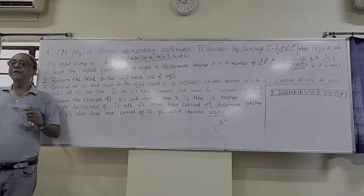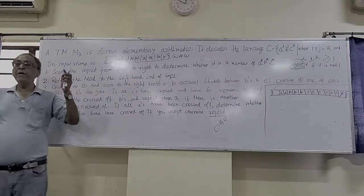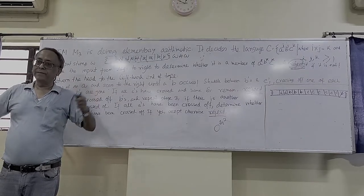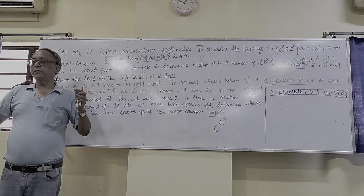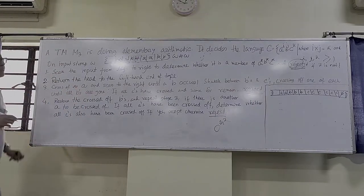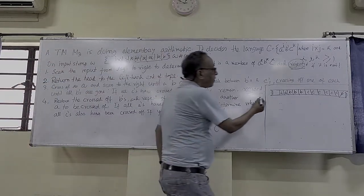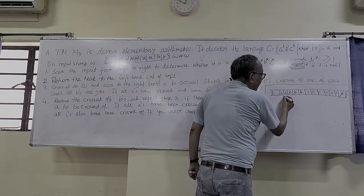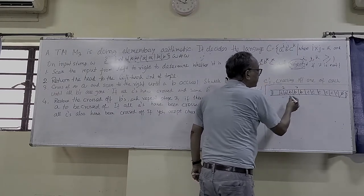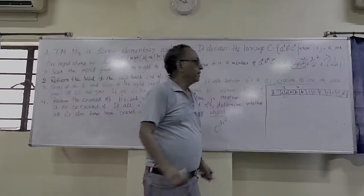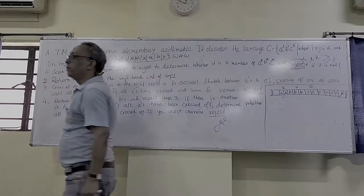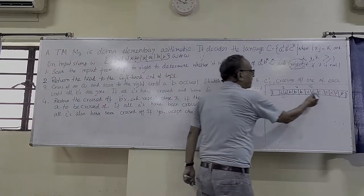Last class we also did conversion of the number of 1s to binary — for example, five 1s converted to binary 5, which is 1 0 1. That is a finite transducer machine. So today's topic is: here we have some number of A's and some number of B's — say 2 A's and 3 B's — so how many C's should there be? It should be 6. We will check whether this arithmetic operation, the multiplication, is done correctly.